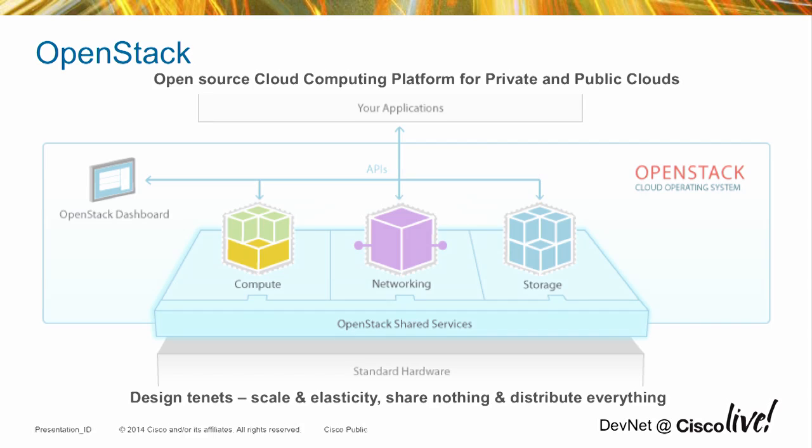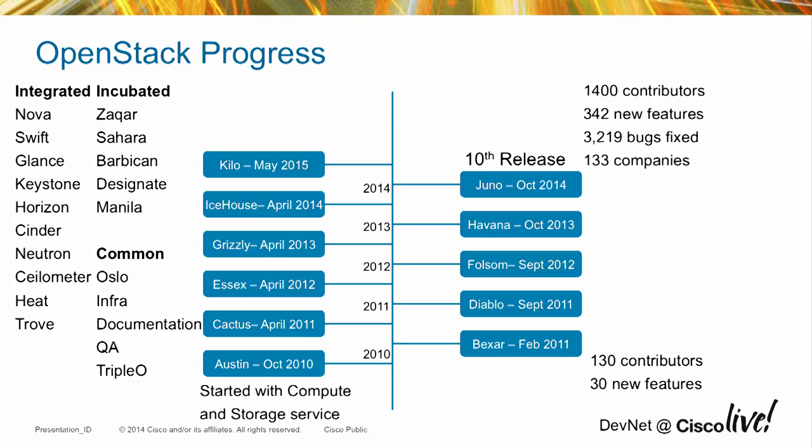One of the fundamental requirements was to ensure a shared-nothing, distribute-everything architecture. All services within OpenStack use REST APIs to communicate with each other — that is the only mechanism today that services communicate, not through database configuration, which is not always secure. On the left is a list of services currently in the integrated and incubated phases, just different categories that OpenStack uses for its services.